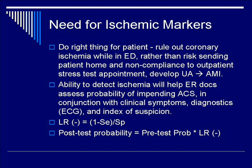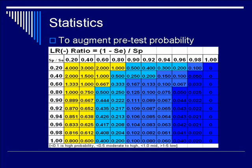We want to risk-stratify the patient, rule out coronary ischemia in the ED, and intervene before it's too late. Looking at the likelihood ratio to augment pre-test probability, specificity is shown on the row and sensitivity on the column. Ideally both should be high to achieve a high likelihood ratio augmentation.